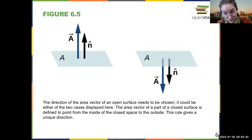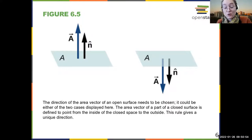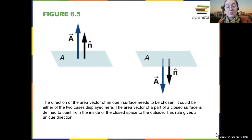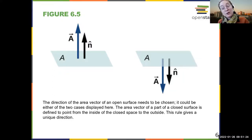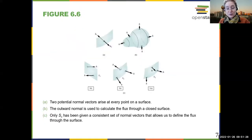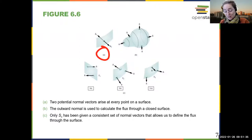There is an ambiguity: n-hat is perpendicular to the area, but in the case of a plane you could choose up or down — there are two signs. The convention we use is that if you have a closed surface, n-hat points outside the object. A closed surface is like a cylinder, anything that forms a closed shell. So you always want n-hat to point outward for a closed surface. If you have an open surface, there is an ambiguity, and two possible n-hats are available.